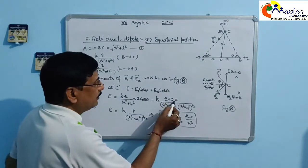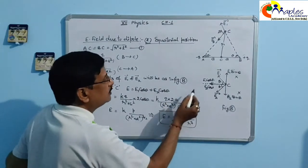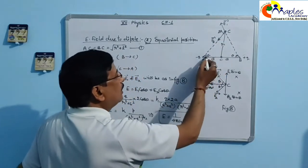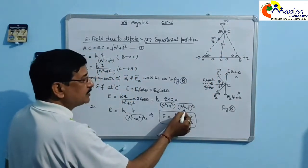Cos theta value is A upon this, base upon hypotenuse. Base is A. Hypotenuse R square plus A square, means half power.